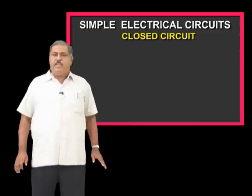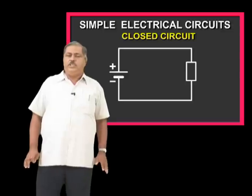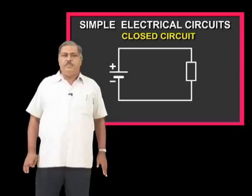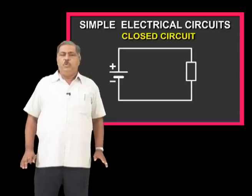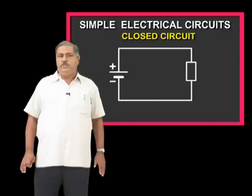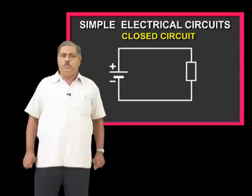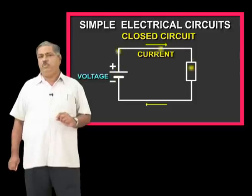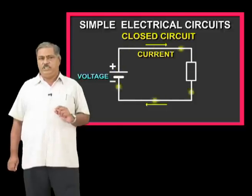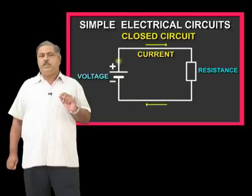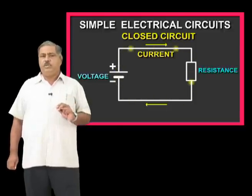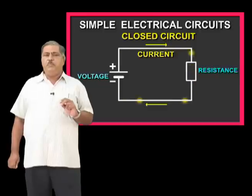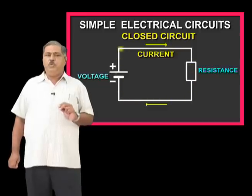In an electrical circuit, there are three essential elements: Voltage, Current, and Resistance. In a Closed Circuit, these three elements are compulsory.